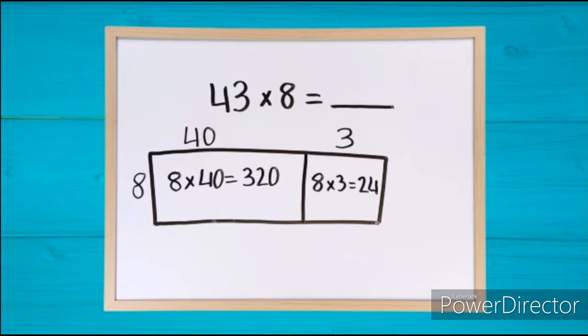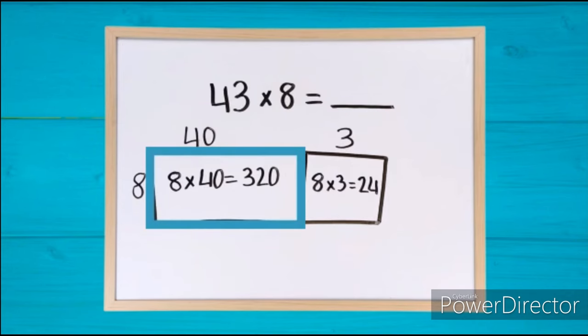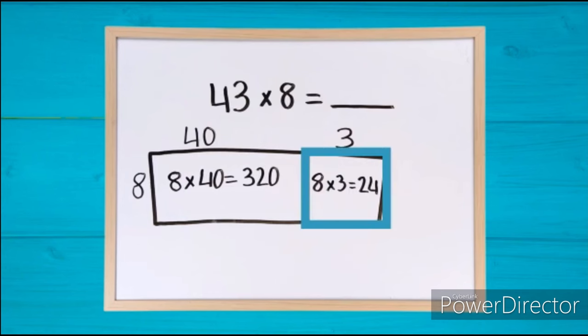Next, multiply 8 times 3 to get 24. Looking at our two rectangles, we have the area of this part of the rectangle and the area of this part of the rectangle.